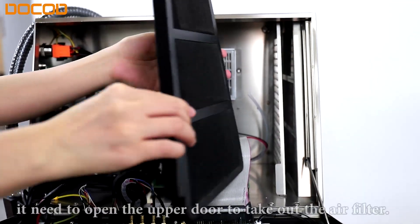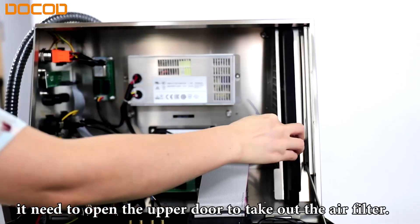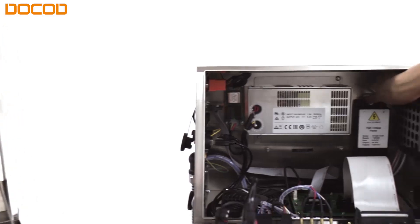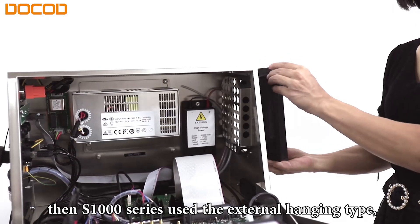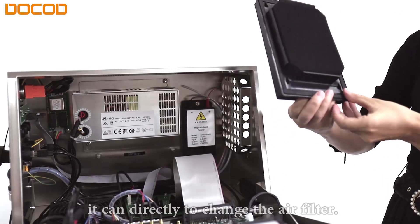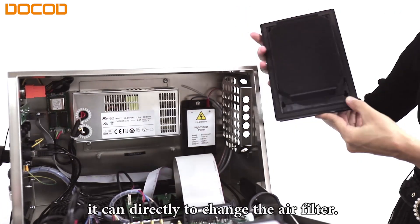When replaced, it needs to open the rear door to take out the air filter. X1000 uses the external hanging type. It can directly change the air filter.